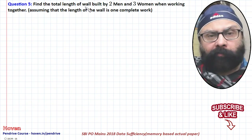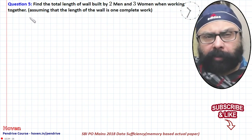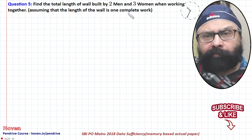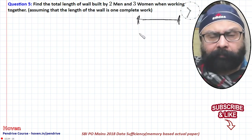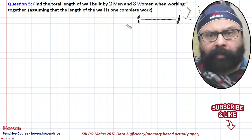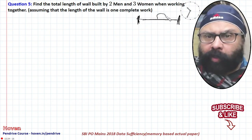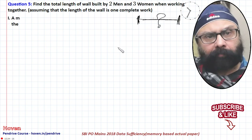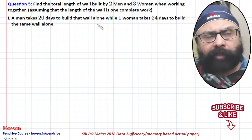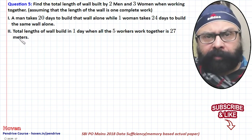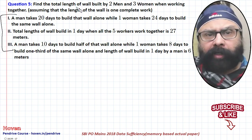The final question: find the total length of wall built by two men and three women working together — treating the full length as one complete work. The wall has a fixed length; two men and three women worked together and completed it. We have to find what that length was.